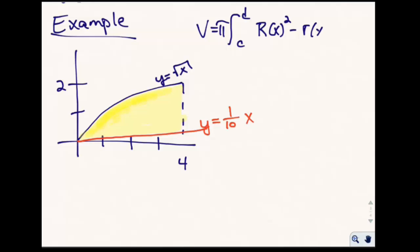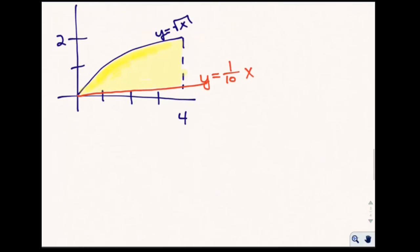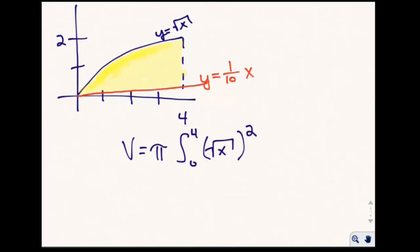Our big R of x is going to be the square root of x. The volume equals pi times the integral from zero to four — since we're integrating with respect to x — of the square root of x squared, minus one-tenth x squared, all integrated dx.